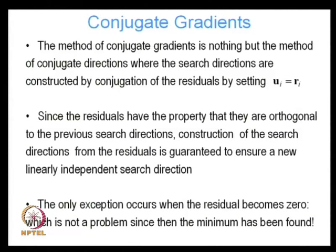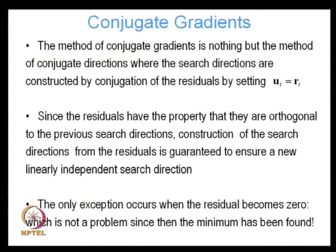The method of conjugate gradients is nothing but the method of conjugate directions where the search directions are constructed by conjugation of the residuals — by setting u_i equal to r_i. Let us take a step back. A major disadvantage of the conjugate directions method is that at each iteration I need all the previous directions from 0 to i−1 in order to do my Gram-Schmidt orthogonalization. Because of that, we have to store and carry all those directions, and at each iteration take the projection along them. For a large problem, the computational cost is enormous.